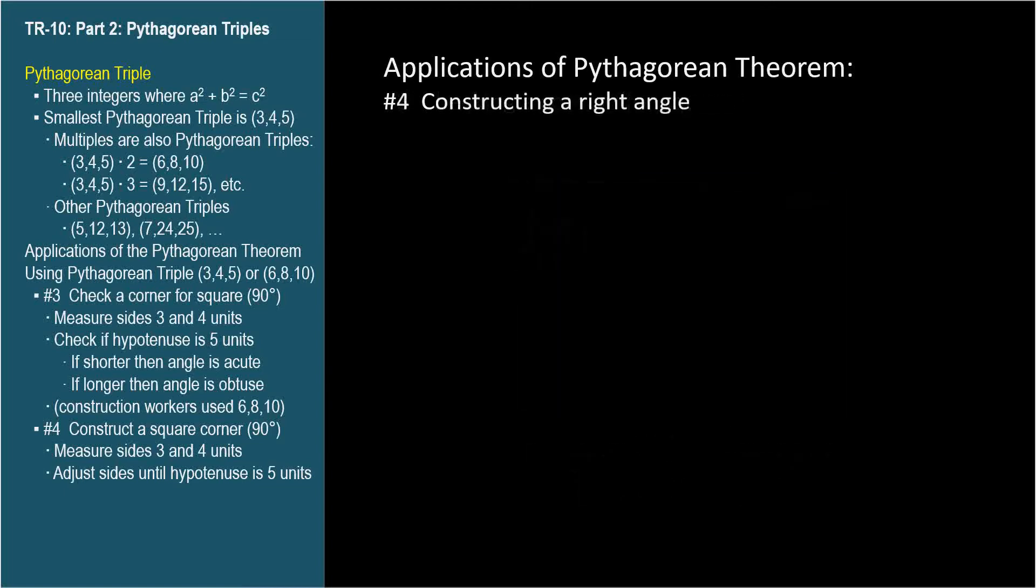The fourth application of the Pythagorean theorem is very similar to number 3. We can use a Pythagorean triple to construct a right angle. In this video clip, a gardener wants to create a square corner in her garden.